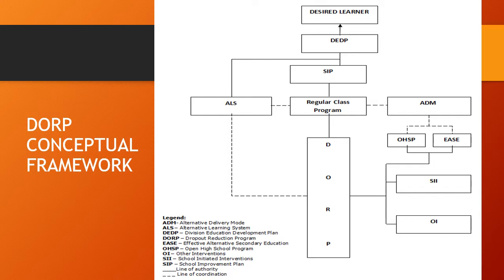Let us talk about the relationship between the DORP and the regular class program. The regular class program provides the major contribution to produce the desired learner, which is the goal of the SIP and the DEDP. The DORP enhances the delivery of the regular program as it prevents potential school leavers from leaving school. Furthermore, DORP seeks to retrieve those who are out-of-school youth and those who want to join the regular classes. DORP supports the regular class program through the strategic components.